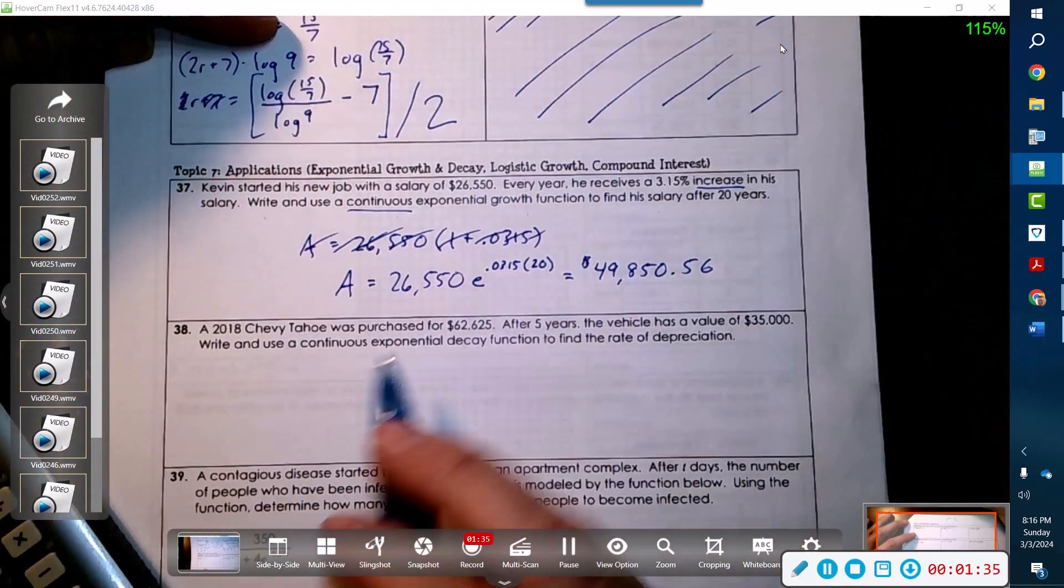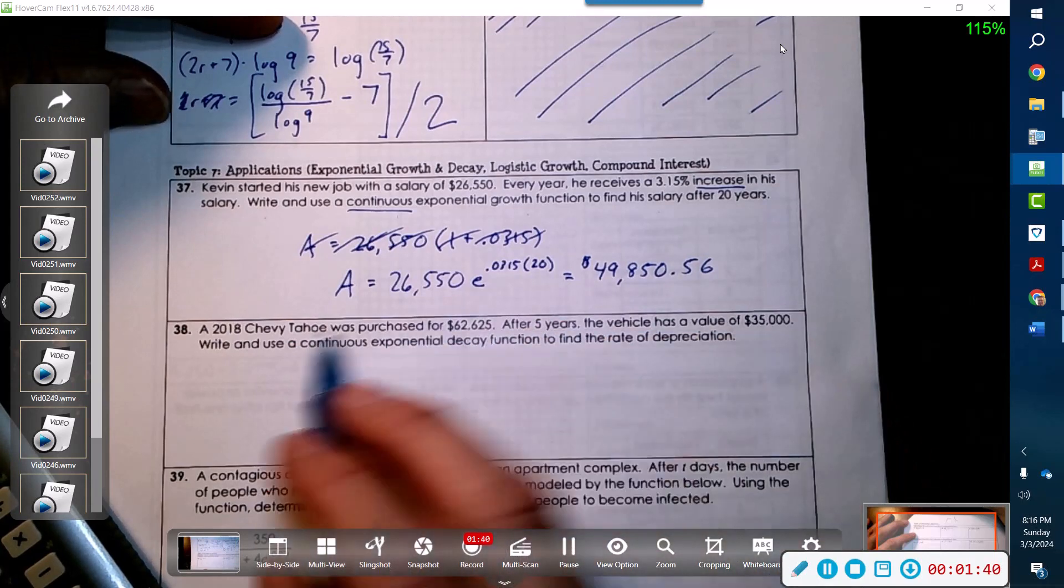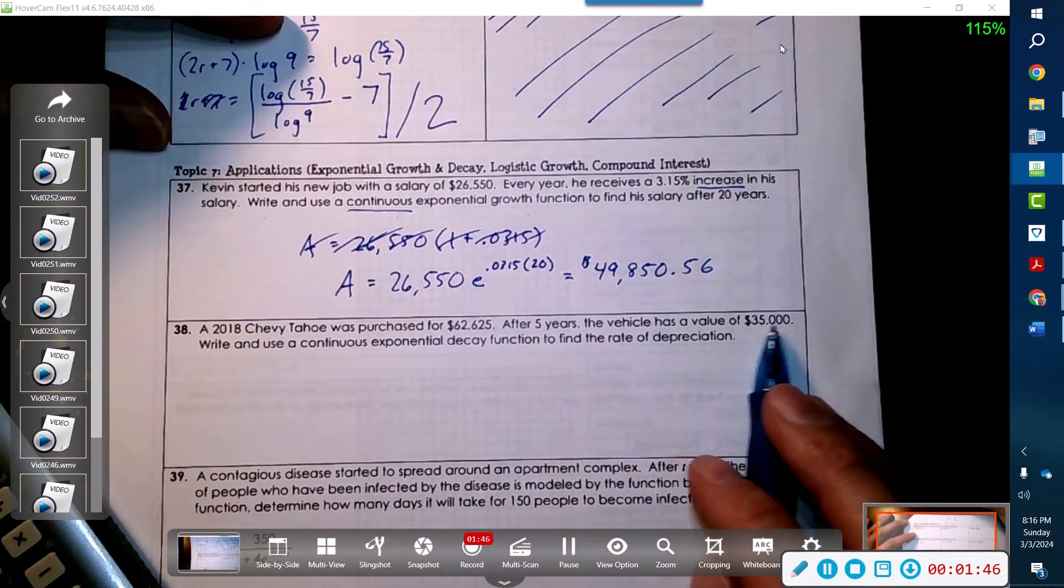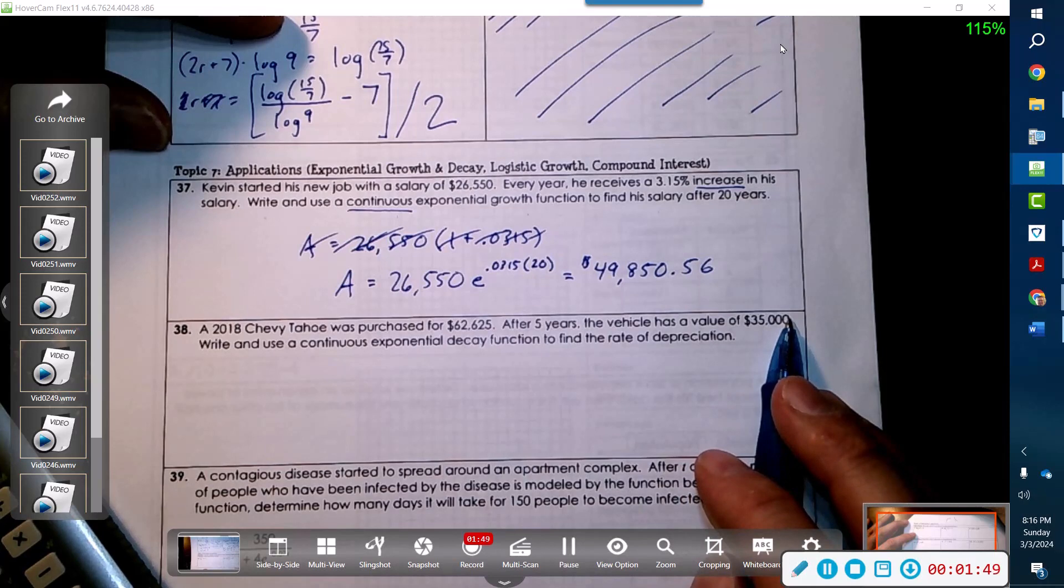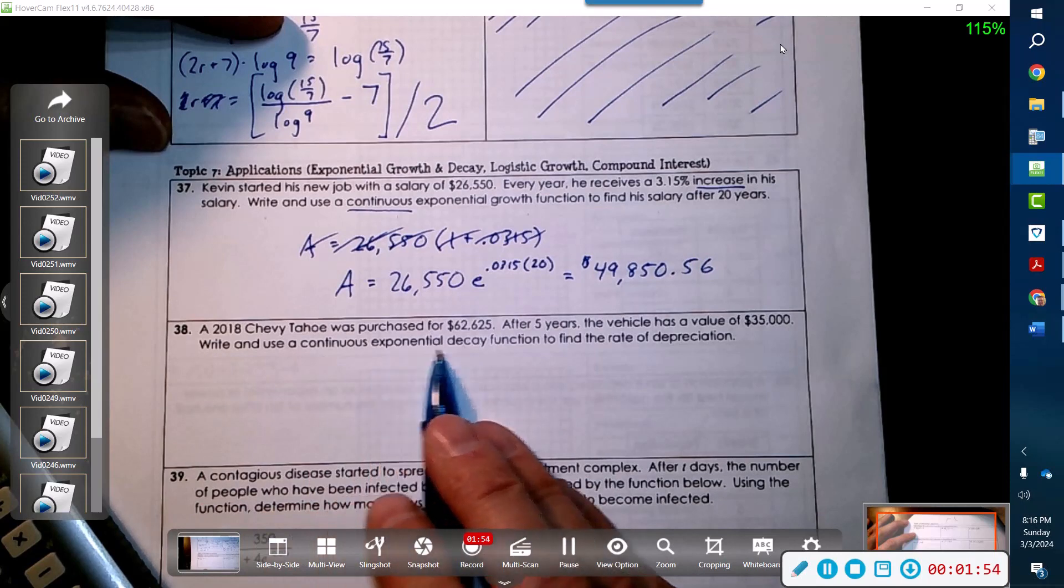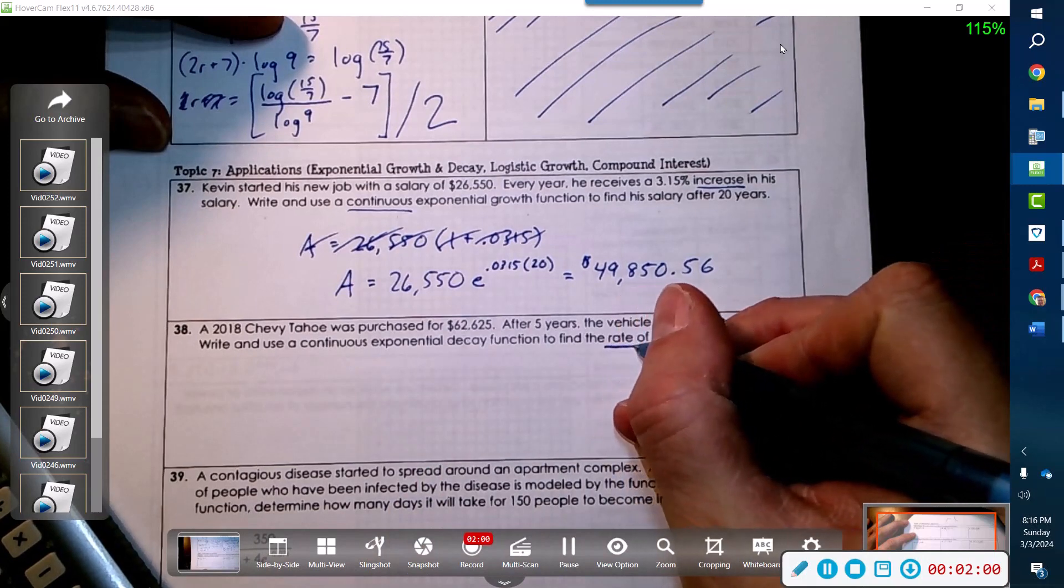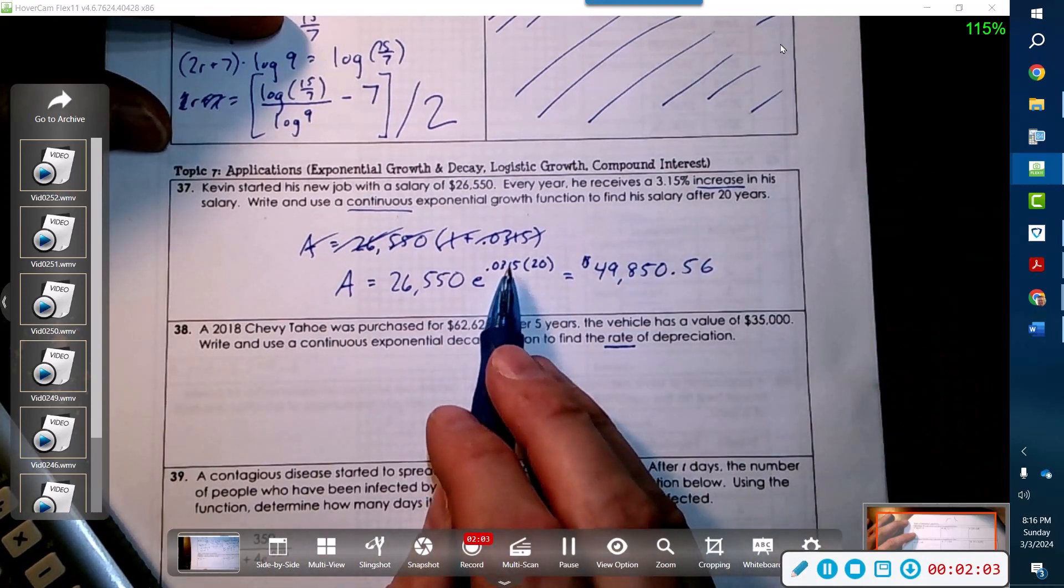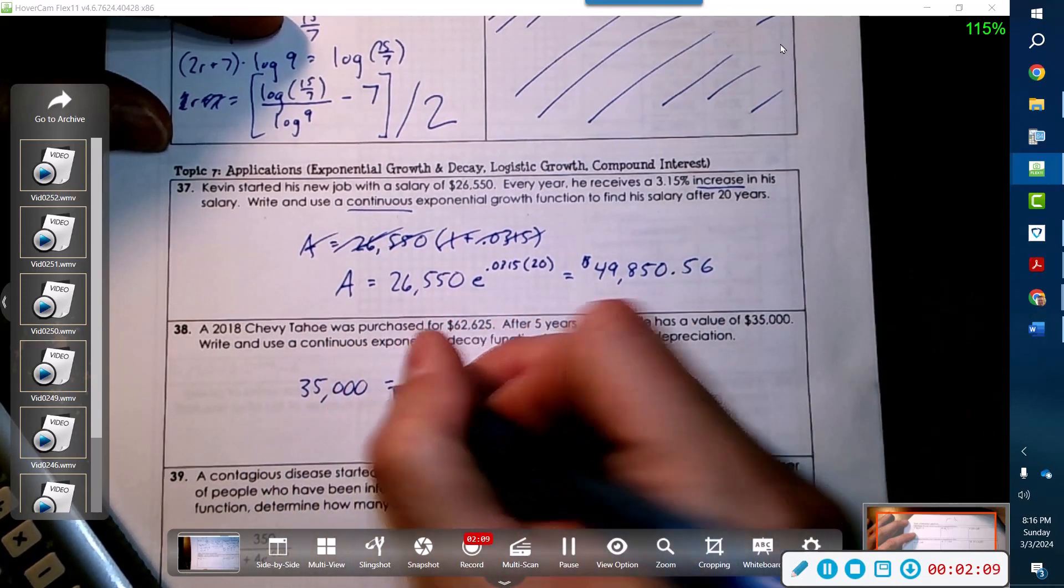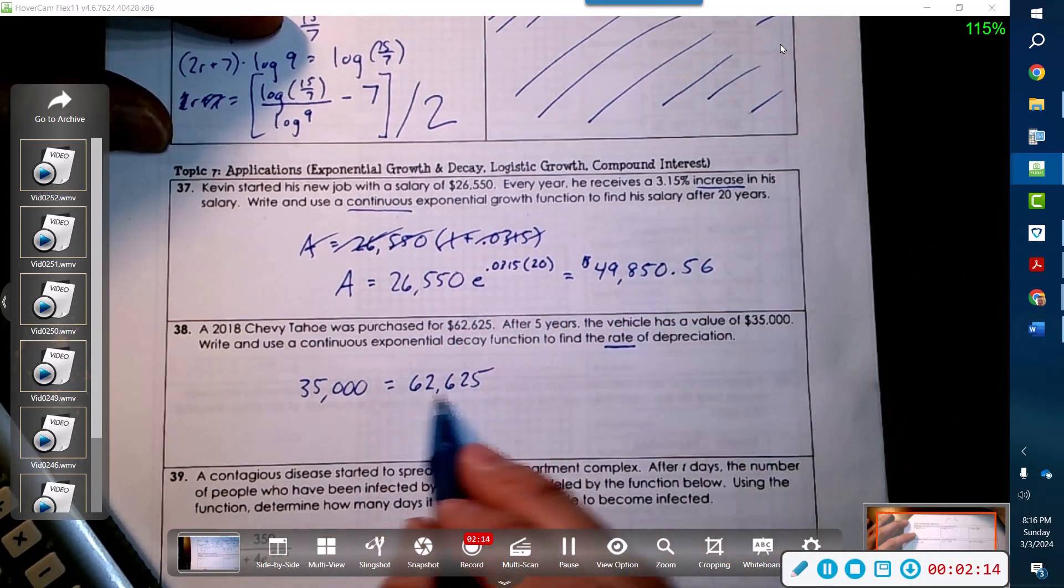A 2018 Chevy Tahoe was purchased for $62,625 - that's a lot of money for a truck. After 5 years the vehicle has a value of $35,000. Yep, that sounds about right. We need to use a continuous exponential decay function to find the rate of depreciation.